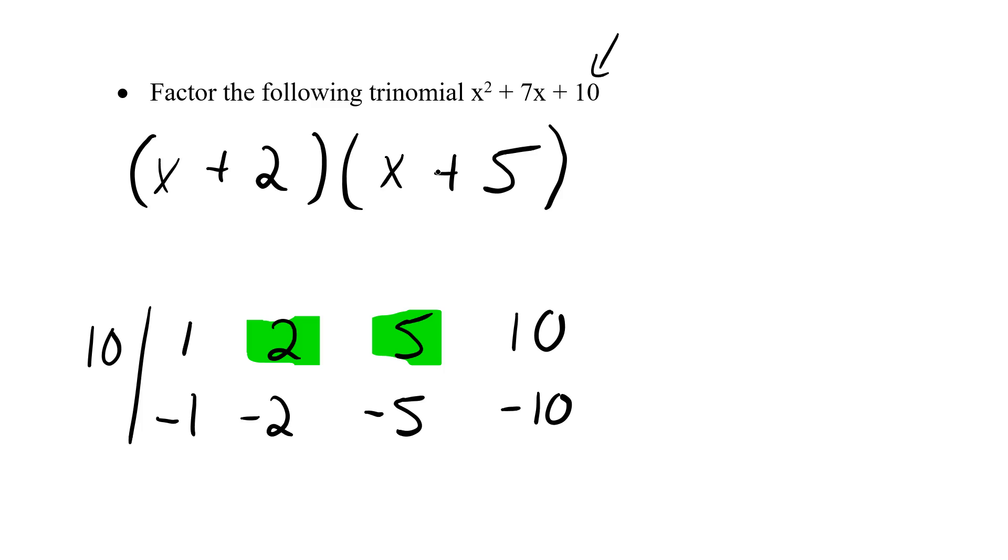Now it would be really nice if we had a little check here and remember our check from last lesson is FOIL. If I do FOIL on these two binomials I should get this trinomial. Let's try it. First x times x, x squared. Outside x times 5, positive 5x. Inside 2 and x positive 2x. Last 2 times 5 is 10 positive 10. Combine my middle terms, x squared plus 7x plus 10. And yep those are the same. So I've got the right answer here.